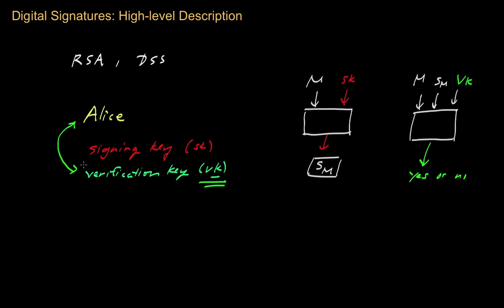Two important remarks: First, the transformation that produces the actual digital signature takes the message as one of its inputs, which means the signature is dependent on the message. If you change the message, you'll get a different signature. In this sense, a digital signature is actually different from a traditional handwritten signature — your handwritten signature stays more or less the same regardless of what you're signing, but your digital signature is very sensitive to what you're signing and will vary depending on what you sign.